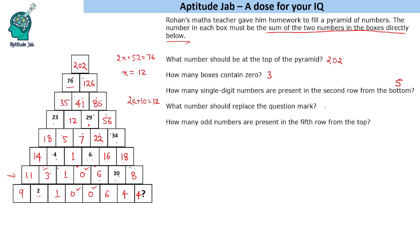What number should replace the question mark? That is 4. How many odd numbers are present in the fifth row from the top? First, second, third, fourth, fifth. So we need to find the number of odd numbers. We can clearly see that these are two odd numbers.